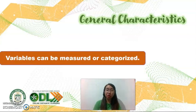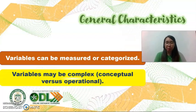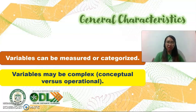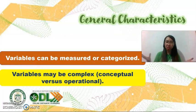First, variables can be measured or categorized. For example: gender, hair color, shoe size, income level — those are actual variables. Another characteristic is that variables may be complex. There is a distinction between conceptual versus operational variables. For example, socioeconomic status — some researchers use it to mean the income range of a particular family, while others use it to mean ownership of permanent housing.